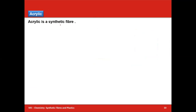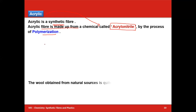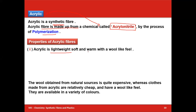Moving to acrylic. Acrylic is another synthetic fiber. A frequently asked exam question is the monomer of acrylic. Acrylic fiber is made up of a chemical called acrylonitrile — remember, the monomer of acrylic is acrylonitrile — by the process of polymerization, which we defined in the previous class as joining small units end to end to form large units called polymers.